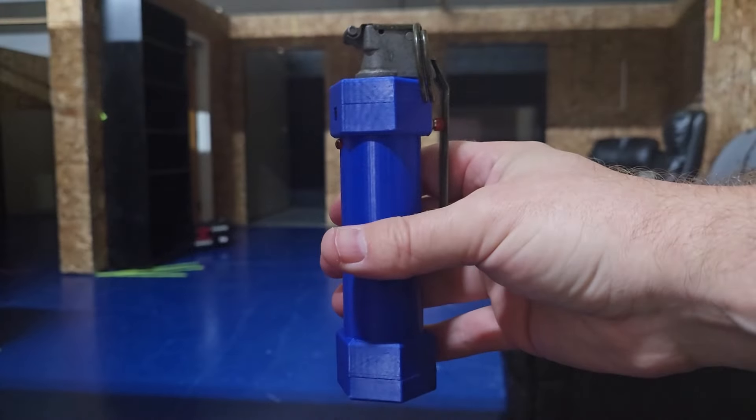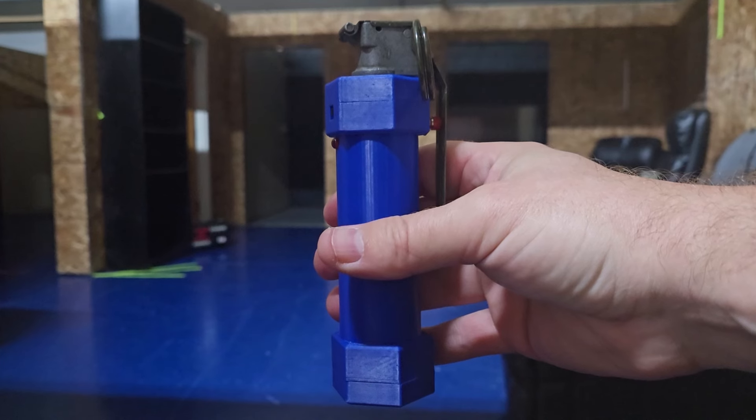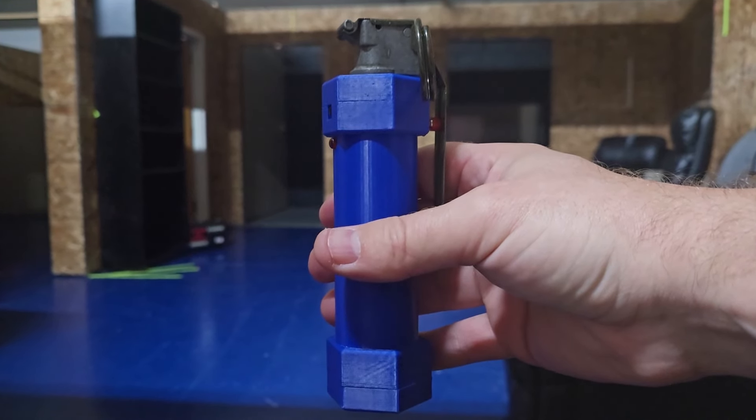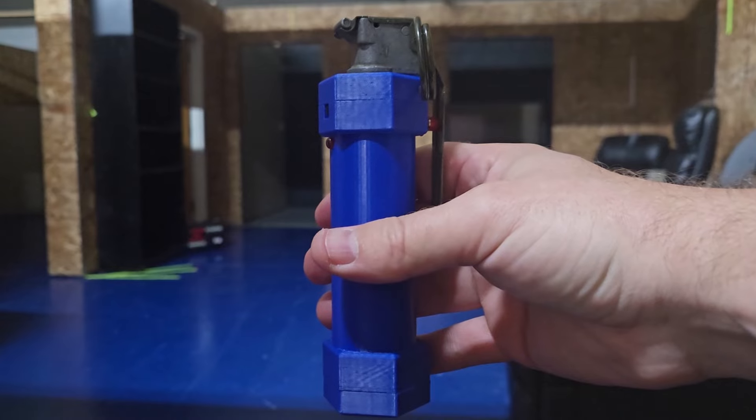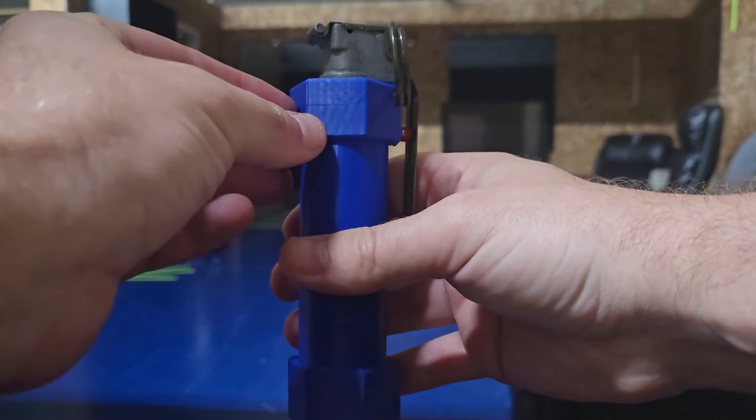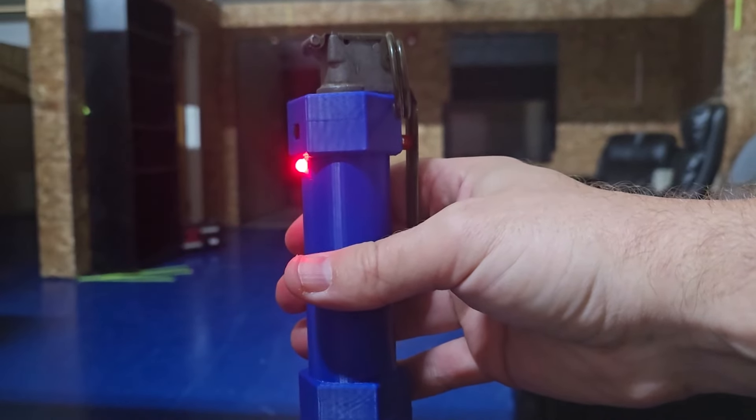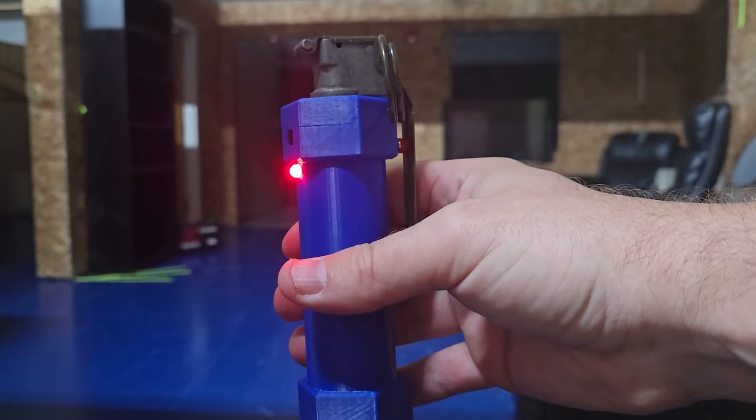We're going to go ahead and show you how to operate this Flashbang Grenade Trainer. I have my Xpander already set up in the corner of the room to provide the flash and blast simulation. I'm going to go ahead and turn my Flashbang Grenade on with the toggle switch. The red LED light indicates that it is armed.